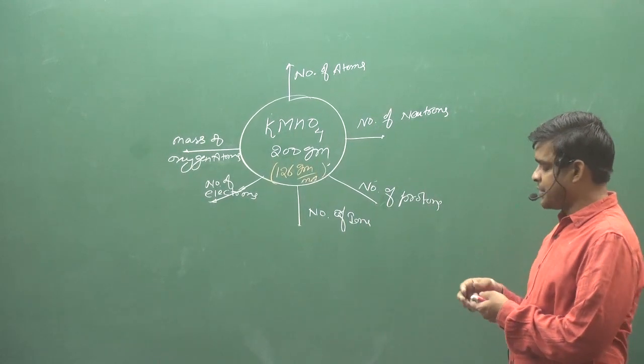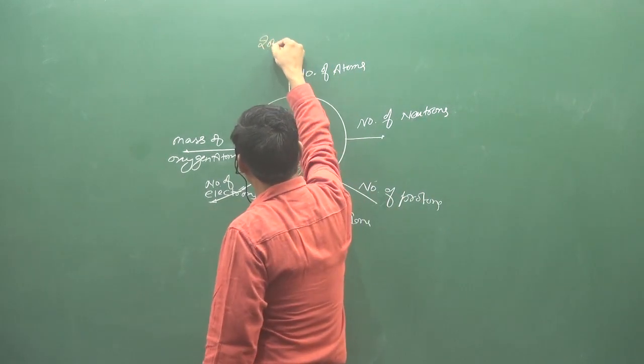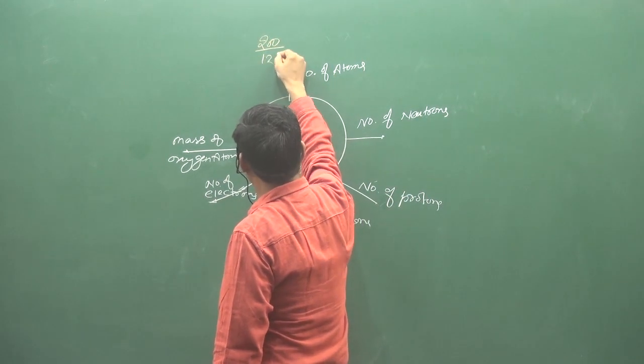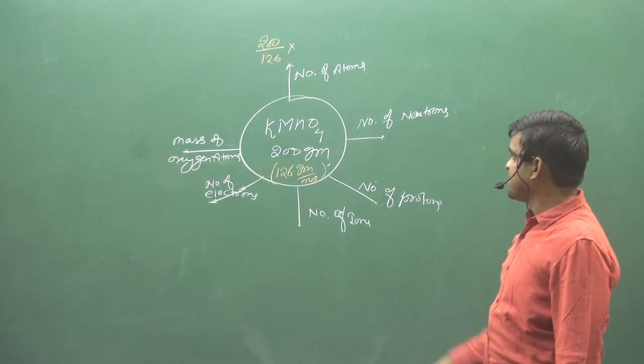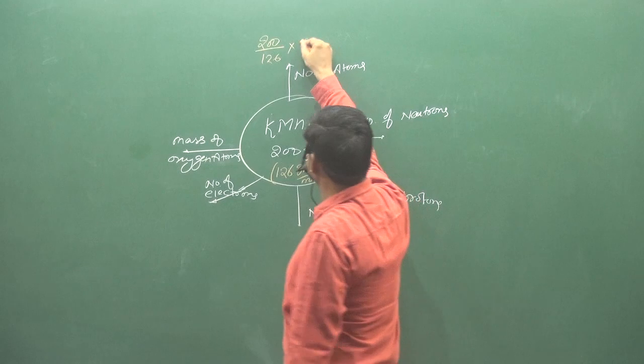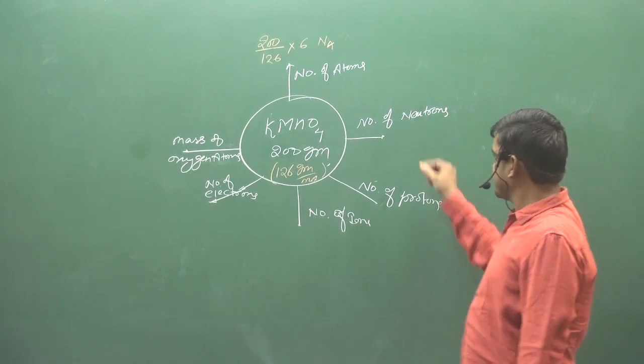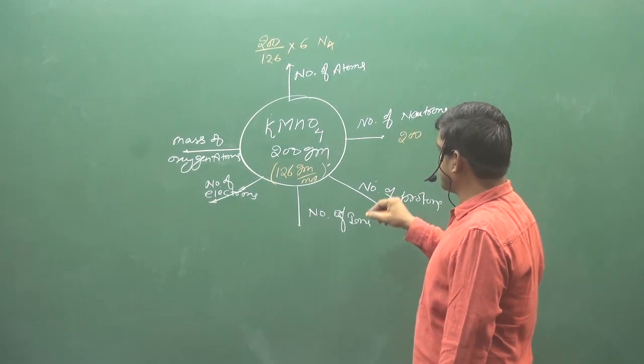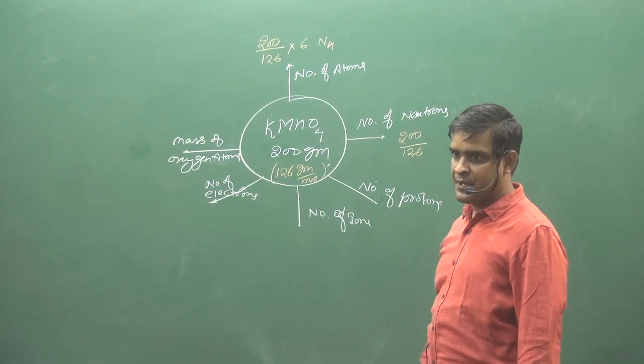Now the rest of the questions. The number of atoms. First KMnO4 which is 200 grams divided by 126 multiplied by the mole of KMnO4. Now the number of atoms, number of neutrons. First the mass of KMnO4 divided by molar mass of KMnO4.